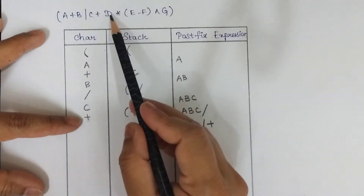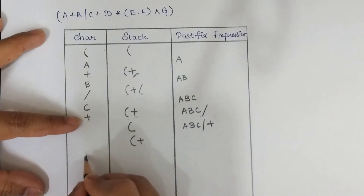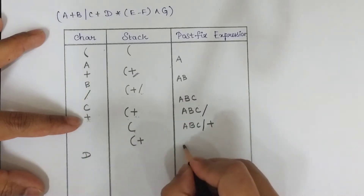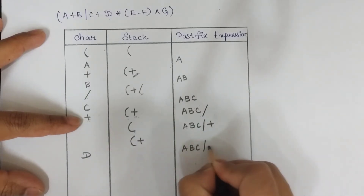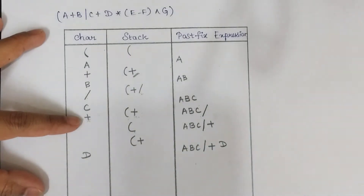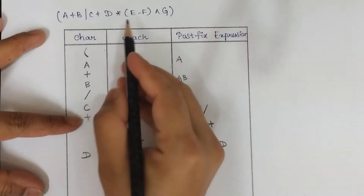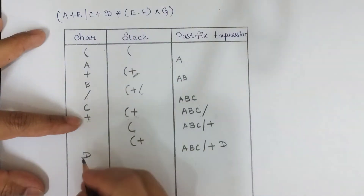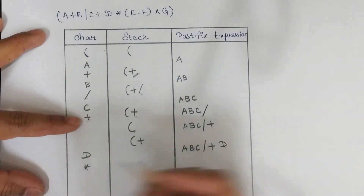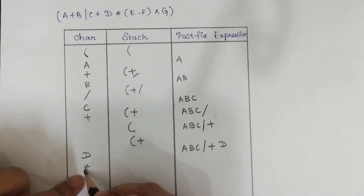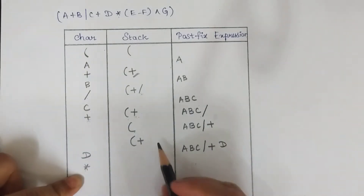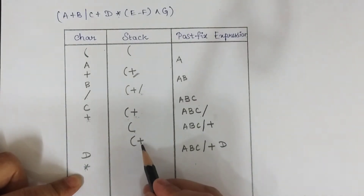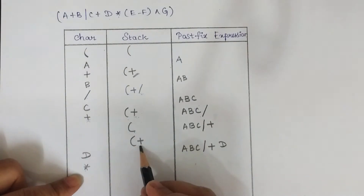The next character is 'D', which is an operand — directly append it to the postfix expression. The next operator is multiplication. When trying to push multiplication into the stack, compare it with the top of the stack, which is the plus operator.